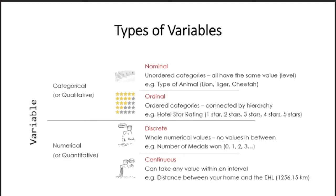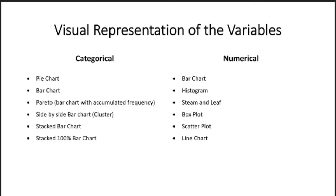All numerical variables that can only take whole number values are classified as discrete, while variables that can take any decimal, square root, or any value are continuous variables. Be very careful with grouped data and intervals — if you look at the variable and see an example like 'number of nights spent in a hotel,' you'd say you cannot spend one and a half night, but if you have an interval, the variable automatically becomes continuous. You can only have a discrete variable if you have a plain summary table with counts.